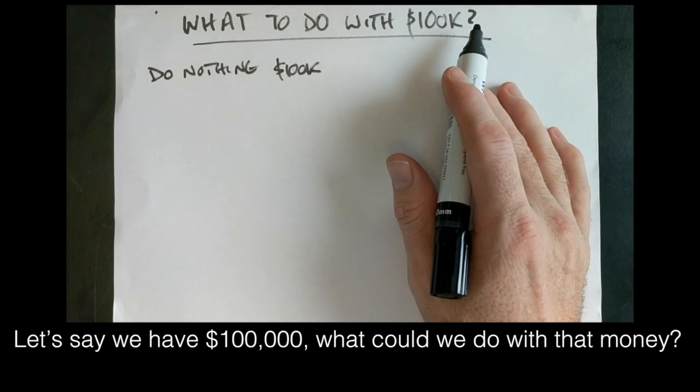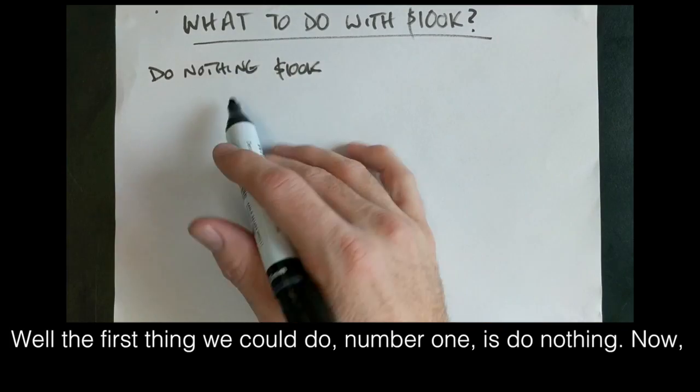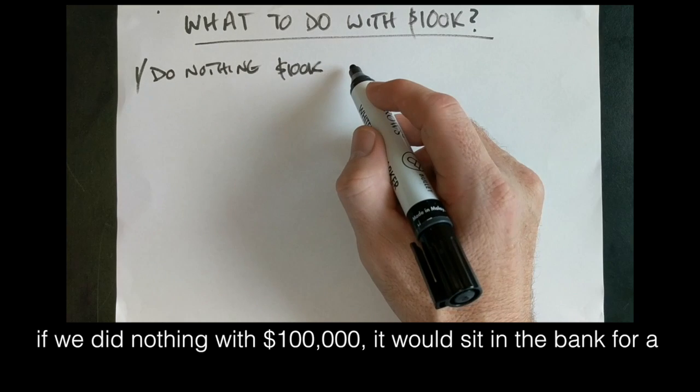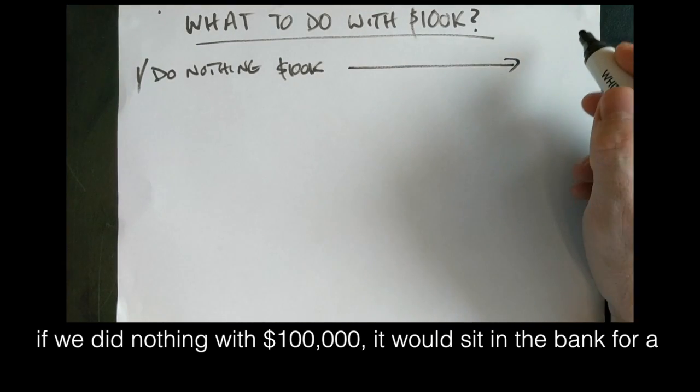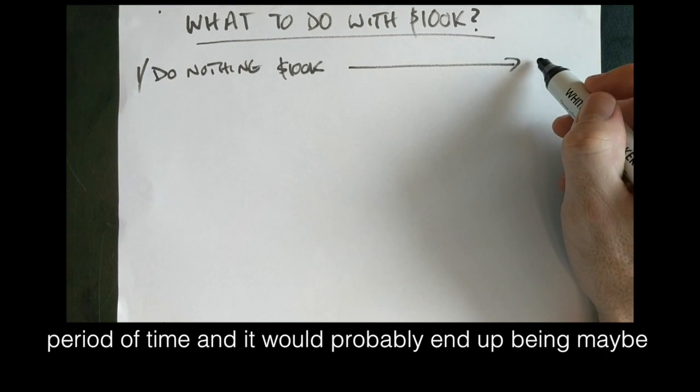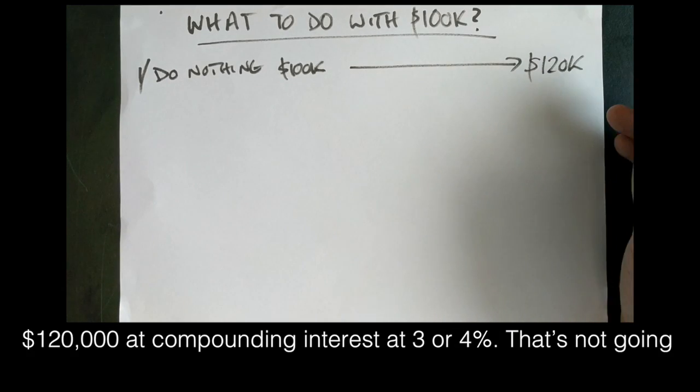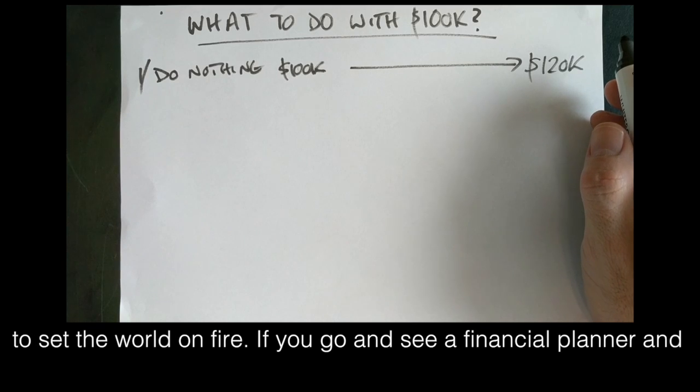Okay, so let's say we had $100,000. What could we do with that money? Well, the first thing we can do, number one, is do nothing. Now if we did nothing with $100,000, it would sit in the bank for a period of time and it would probably end up being maybe $120,000 of compounding interest at 3% or 4%. That's not going to set the world on fire.